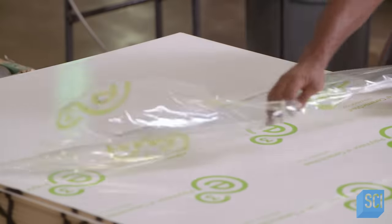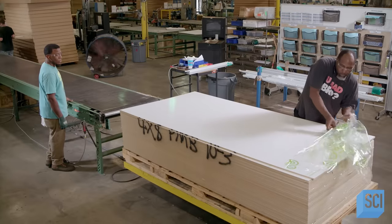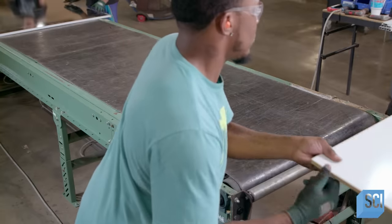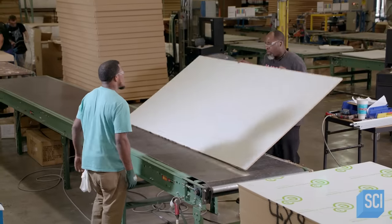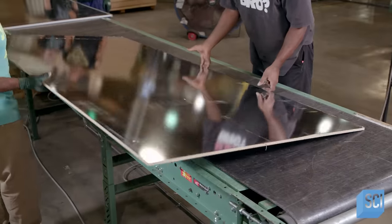Meanwhile, technicians peel off the protective film covering the writing surface. Then they flip over the board to assemble the parts from the back.